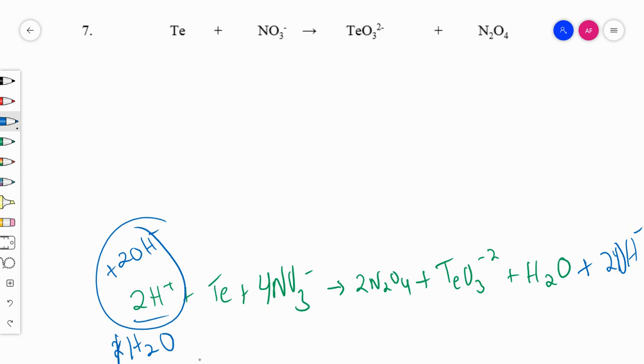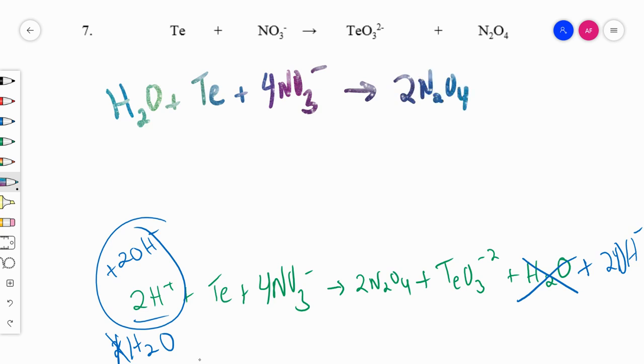So then this cancels with the H2O here. And our final reaction is H2O plus tellurium plus 4NO3 minus yields 2N2O4 plus TeO3 2 minus plus 2OH minus.